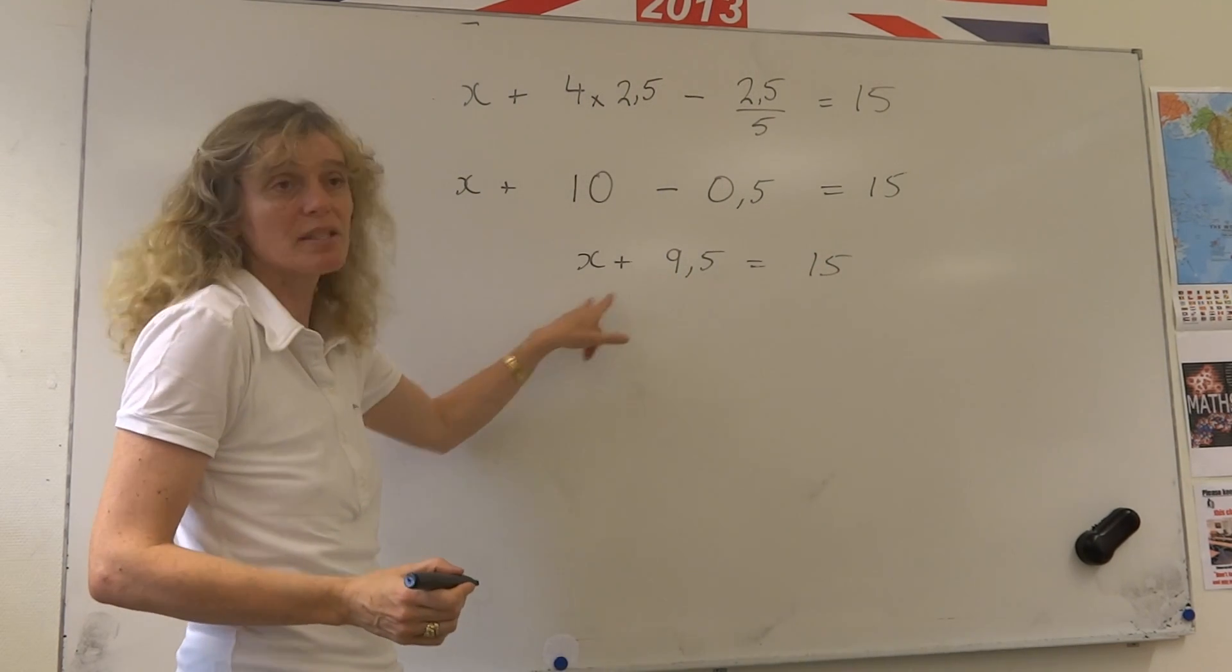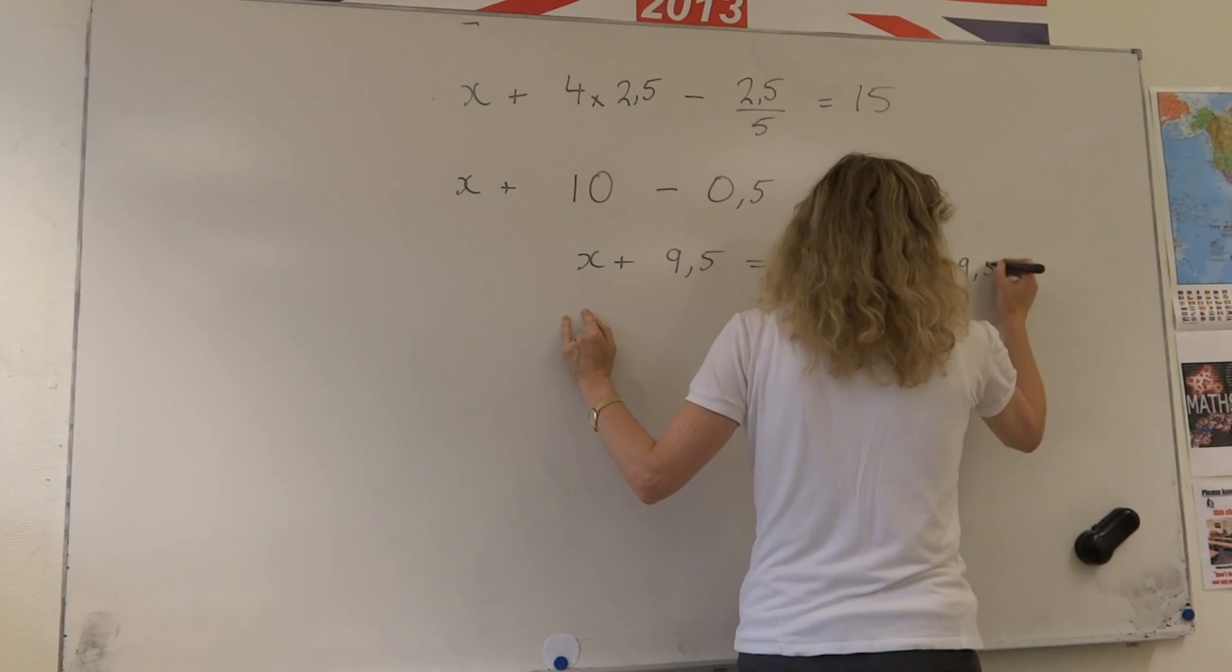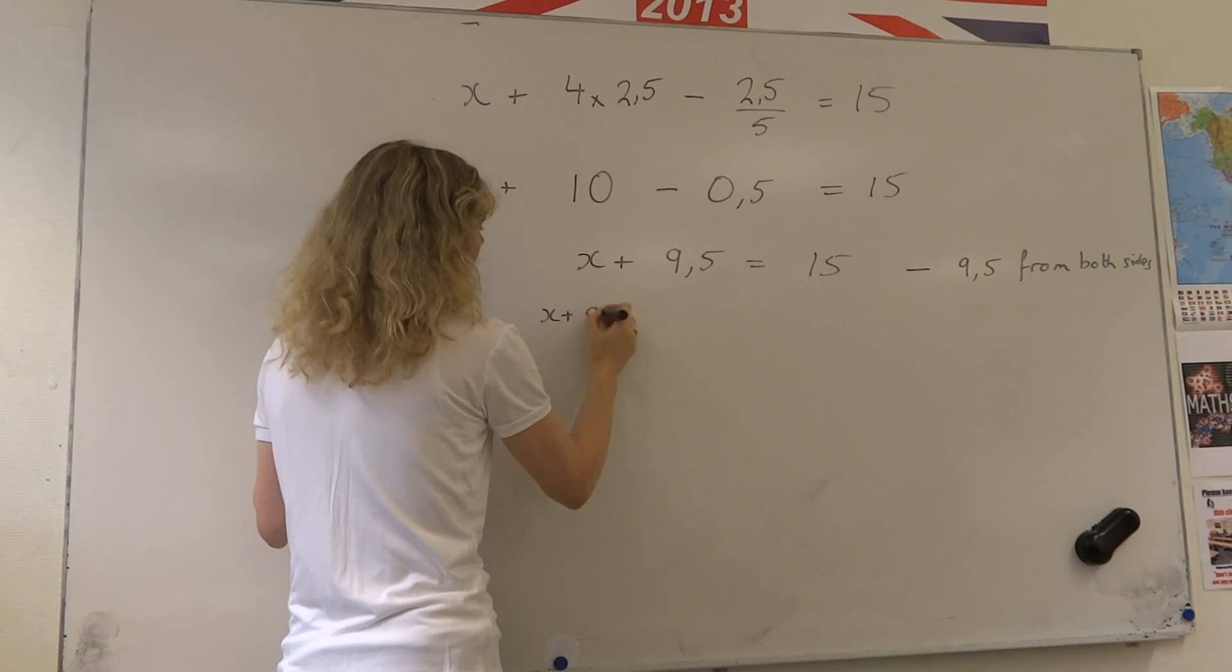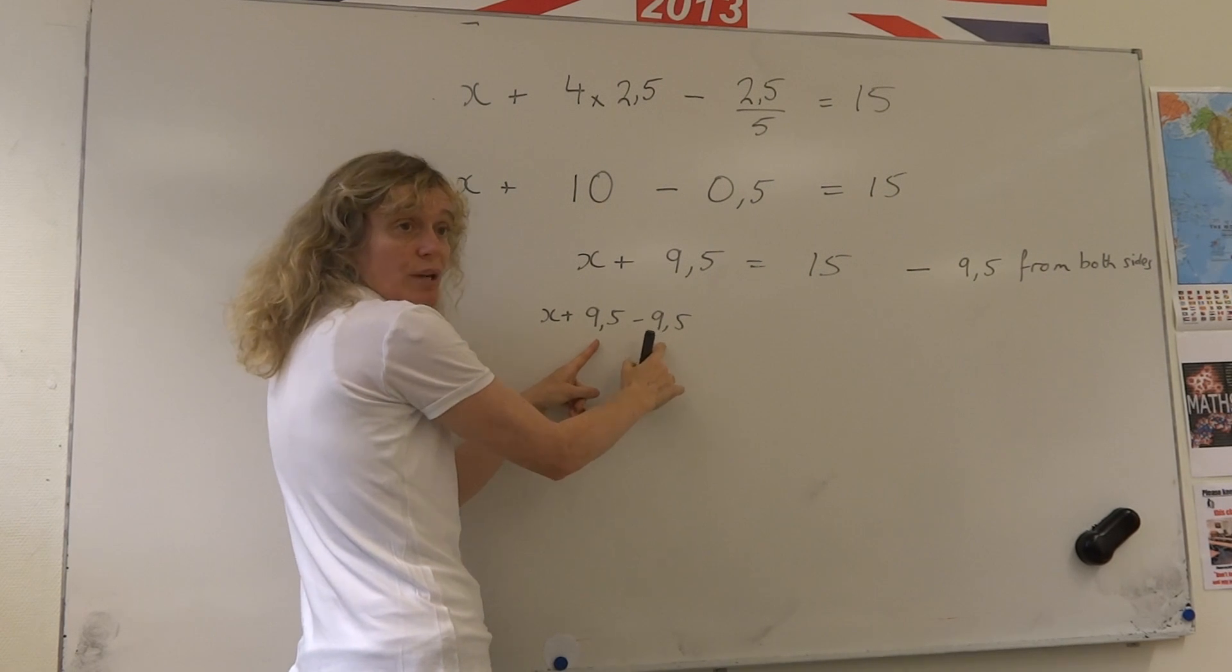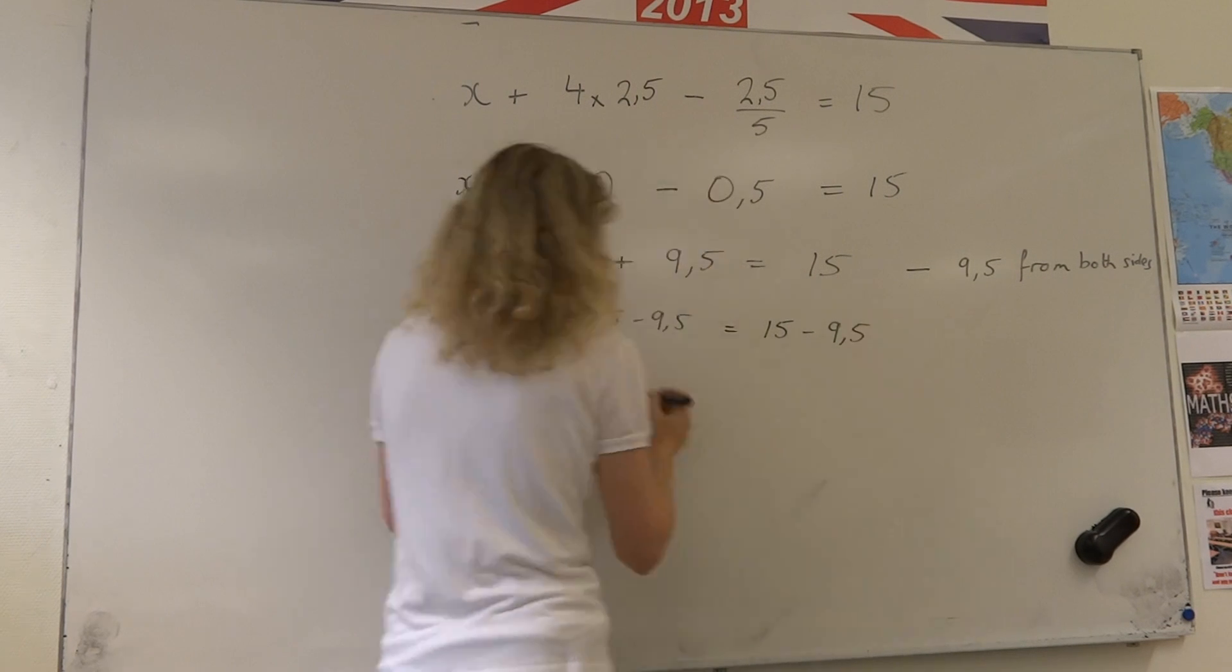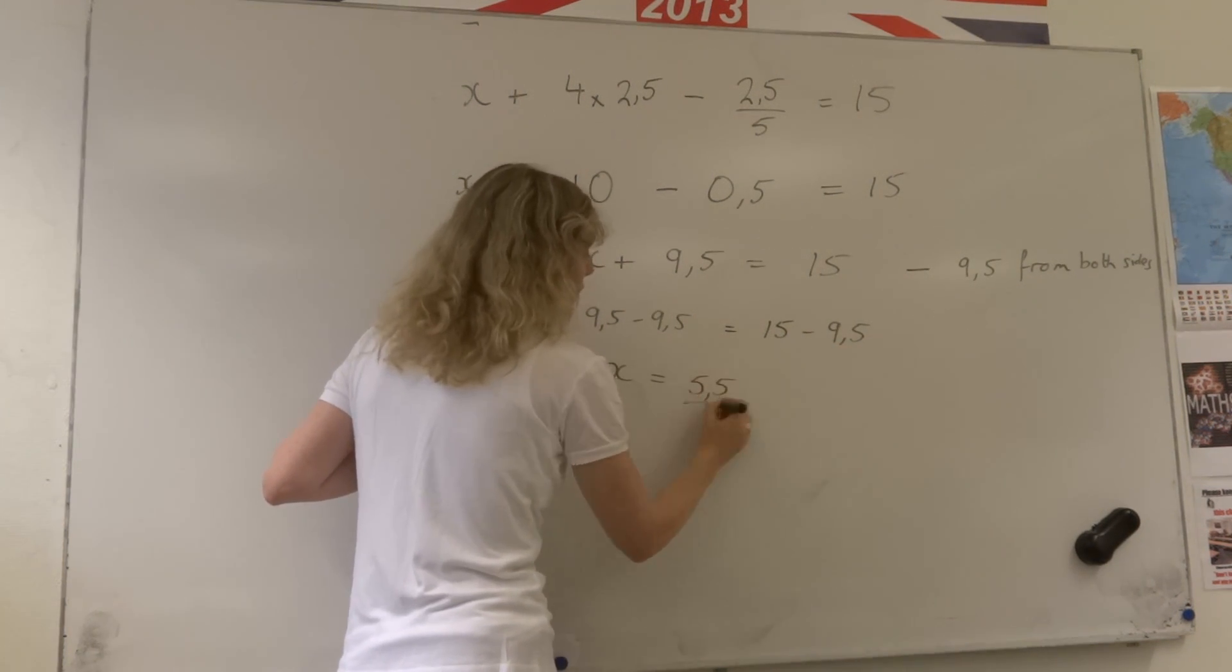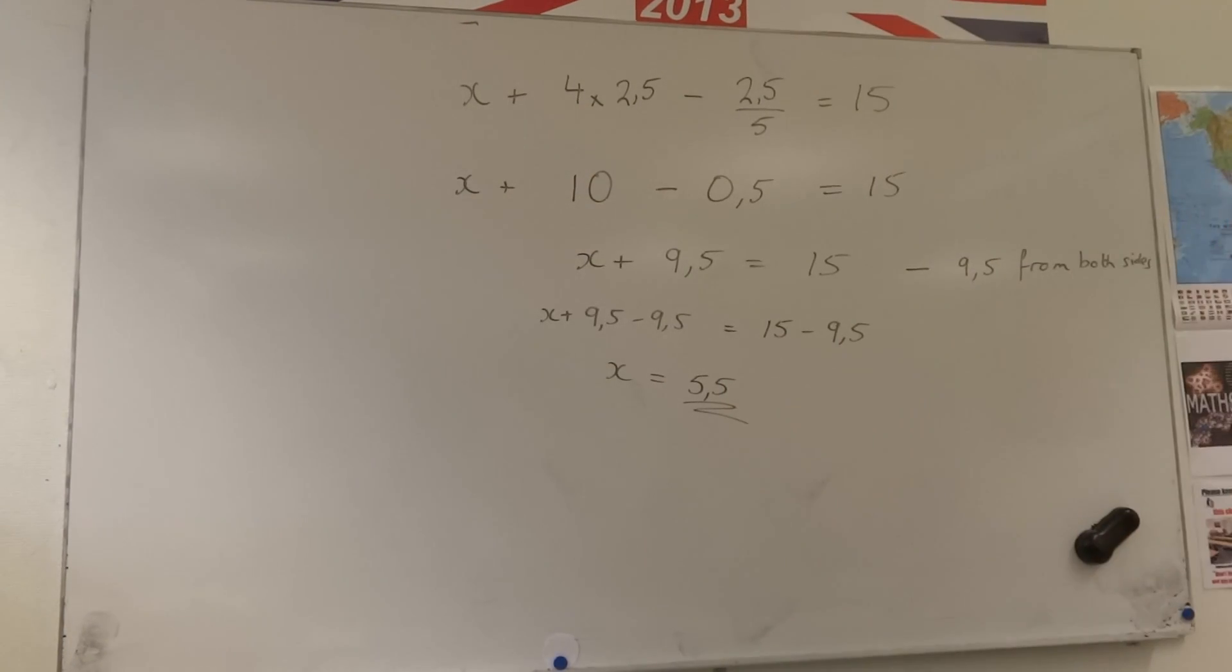Now I don't want to know what x plus 9 and a half is. I want x by itself. So I subtract 9 and a half from both sides. So I get x plus 9 and a half minus 9 and a half, giving me the 0 that I want here. I want to get rid of this number here. Equals 15 minus 9 and a half. 9 and a half minus 9 and a half is 0. So x equals 15 minus 9 and a half. That's going to be 5 and a half. Giving me my solution for x. So step by step using your methods of algebra.